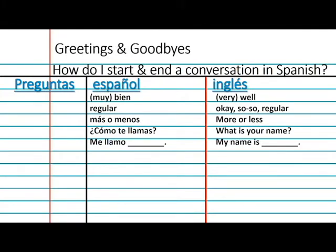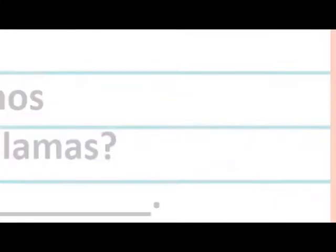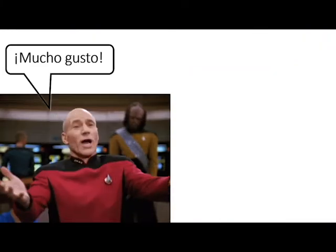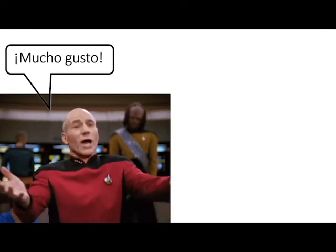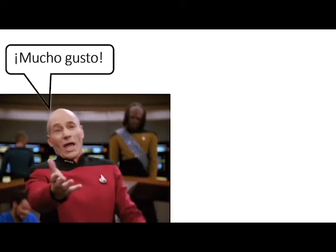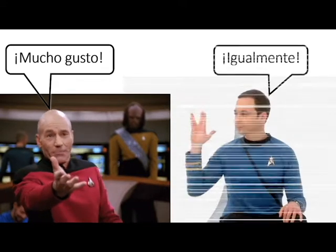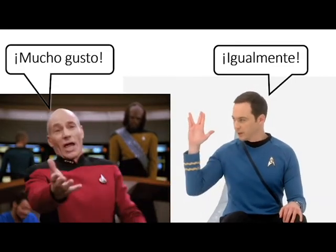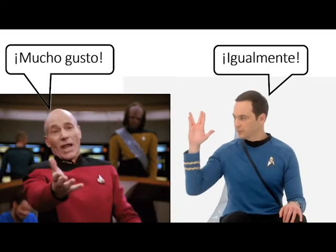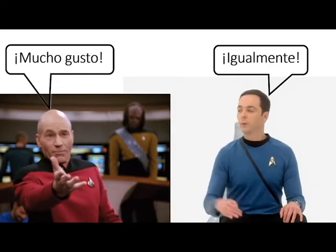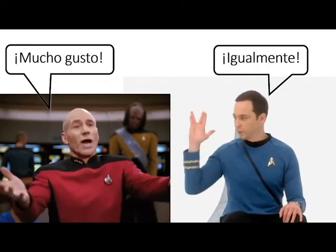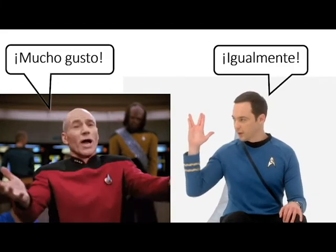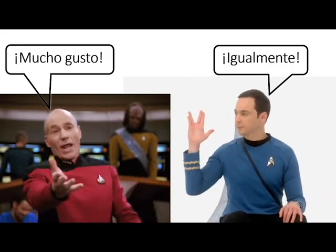Let's say you've talked to someone and now you're ending the conversation — you want to say it was nice to meet them. You could say mucho gusto, which means nice to meet you. Literally, mucho gusto means it was a pleasure — a lot of pleasure — as in it was a pleasure to meet you. And someone could respond igualmente, meaning likewise — it was likewise a pleasure to meet you. You could also say encantado or encantada, which also means nice to meet you but it's a bit more intense — delighted to meet you.